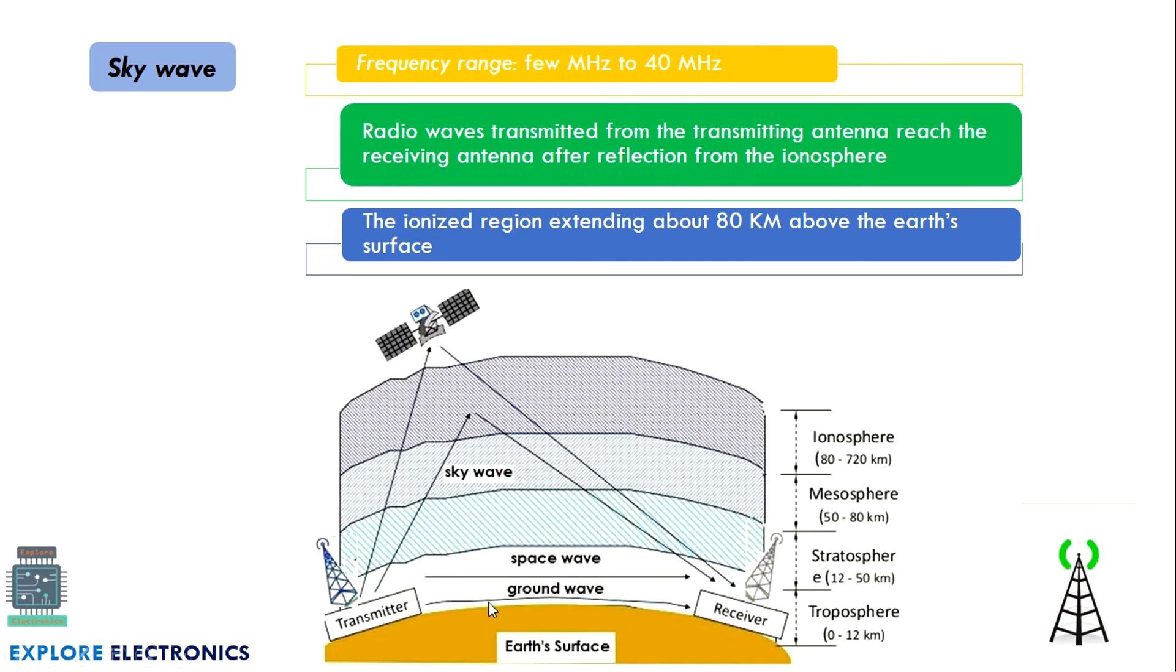There is an ionosphere above the mesosphere. You can see here troposphere, stratosphere, mesosphere - above that around 80 kilometers from the earth surface is the ionosphere. In this ionosphere, we have electrons and ions in this space.